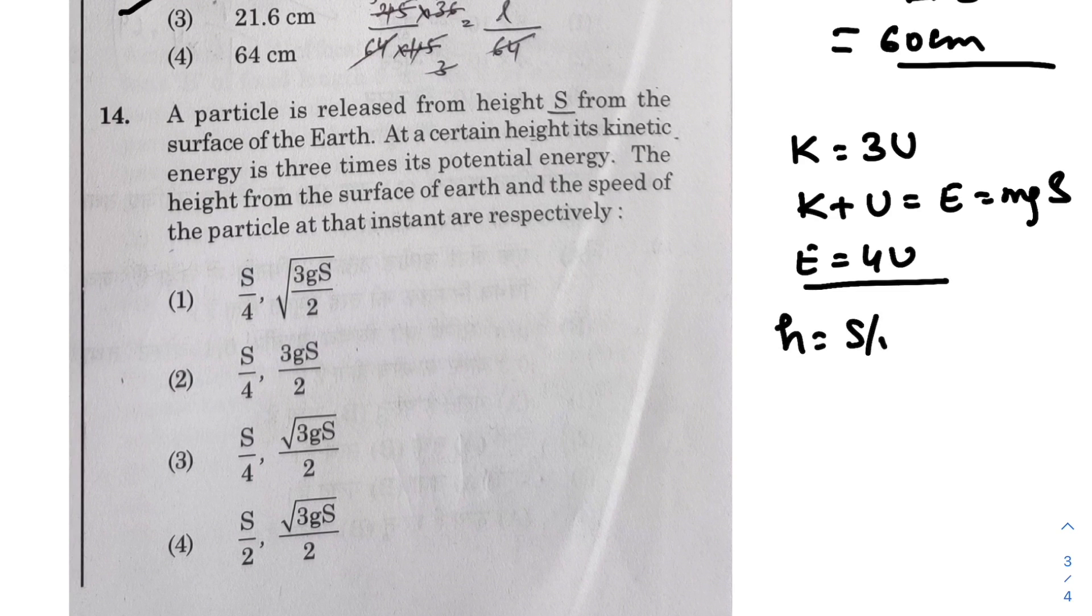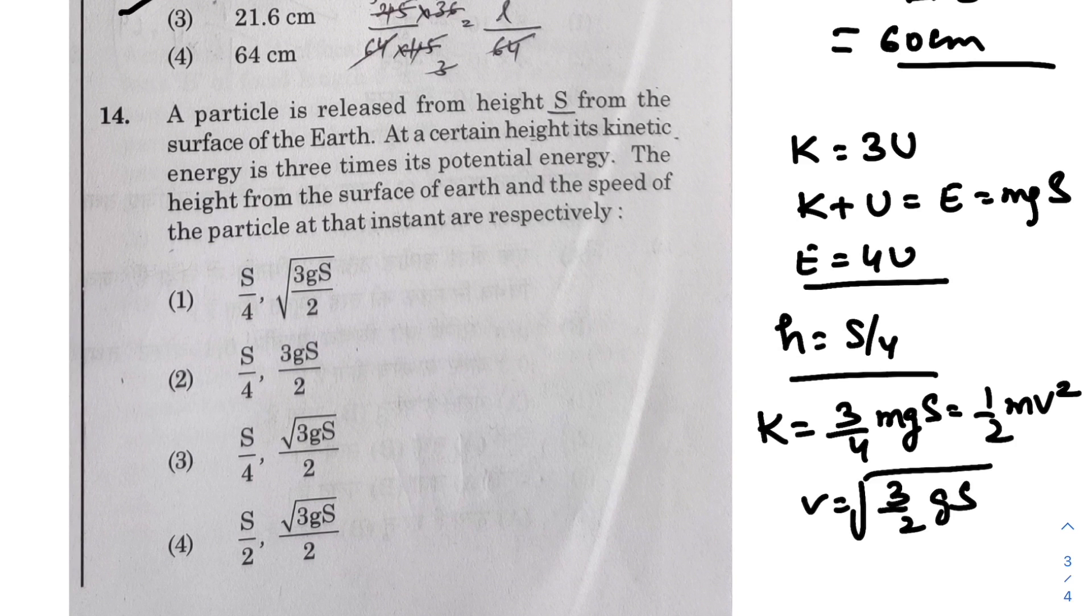So write E equals mg, let's say height is S. So at this height U becomes E by 4. So the height would be S by 4 for sure, and the kinetic energy would be three-fourths of that. So three-fourths mgS, and that would be equal to half m v square. So speed would be root of 3 by 2 gS. So we can go with option 1 in this case.